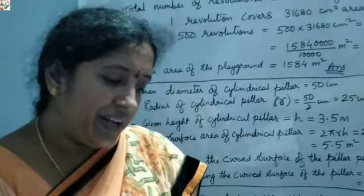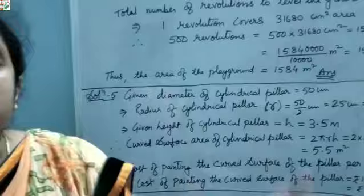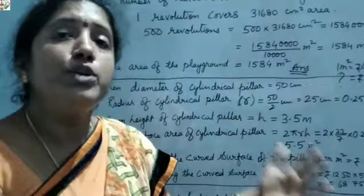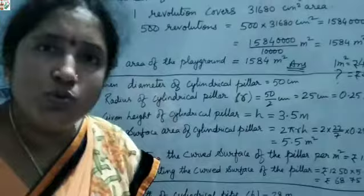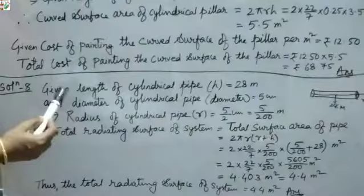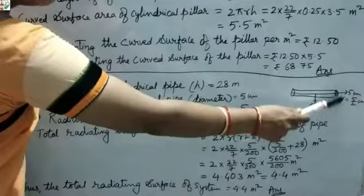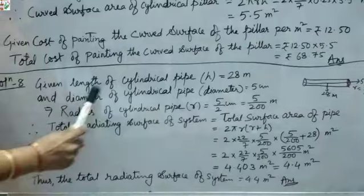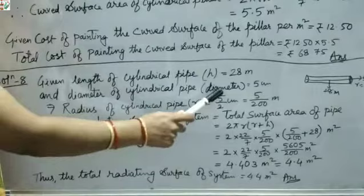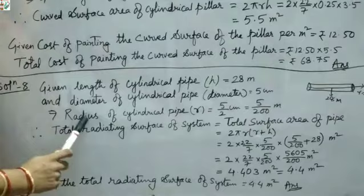Find the total radiating surface in the system — that means the total surface area, using the formula 2πR(R + H). R and H are given. Length H = 28 m. Diameter = 5 cm, so radius R = 5 upon 2 cm.